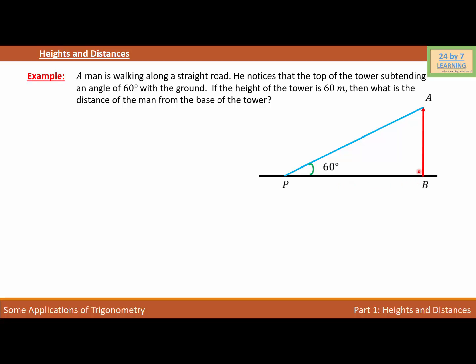As we know, the tower is perpendicular to the horizontal surface, so this angle will be 90 degrees. And if you look closely, it is given that the height of the tower is 60 meters, so AB will be 60 meters.